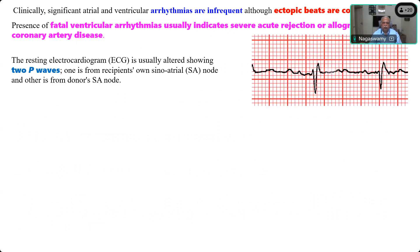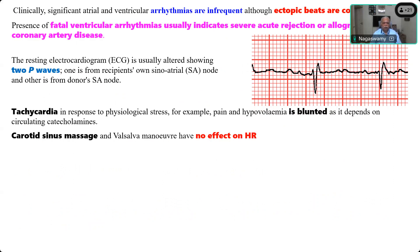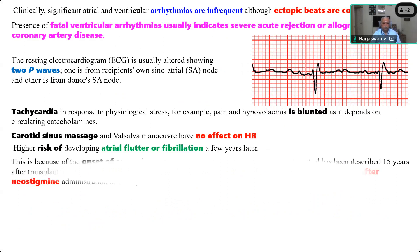The ECG always shows two P waves — a distinct first P wave and second P wave followed by the QRS, with the QRS sometimes showing a slightly wider duration. The tachycardia response to physiological stress is completely blunted — for pain or hypovolemia, the normal tachycardia response will not occur. Carotid sinus massage or Valsalva maneuver to reduce SVT is also not effective.